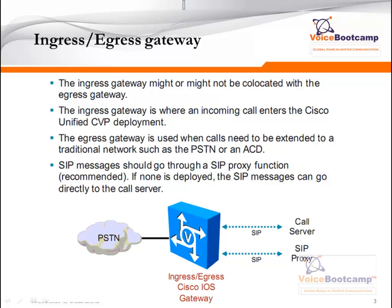Ingress and Egress Gateway can be co-located or might not be on the same device. The Ingress Gateway is connected to a service provider where it will receive calls from customer clients into their contact center environment, either through CVP deployment or ICM. The Egress Gateway is used when the call needs to be extended to the traditional network, such as sending calls to PSTN or a mobile network.